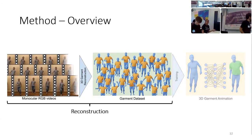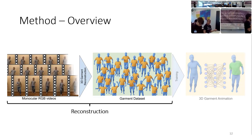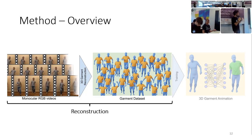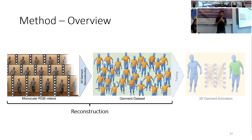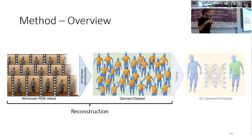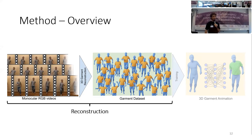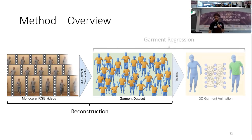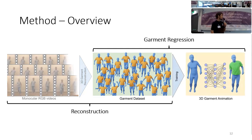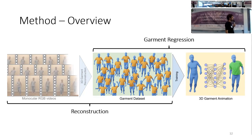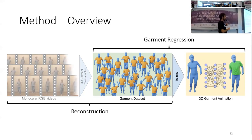The first part of our project is the reconstruction method, which takes RGB videos and creates a digital version of the garment of the subject. The second part is the regressor, which will be able to predict how that specific garment will deform for a new pose.